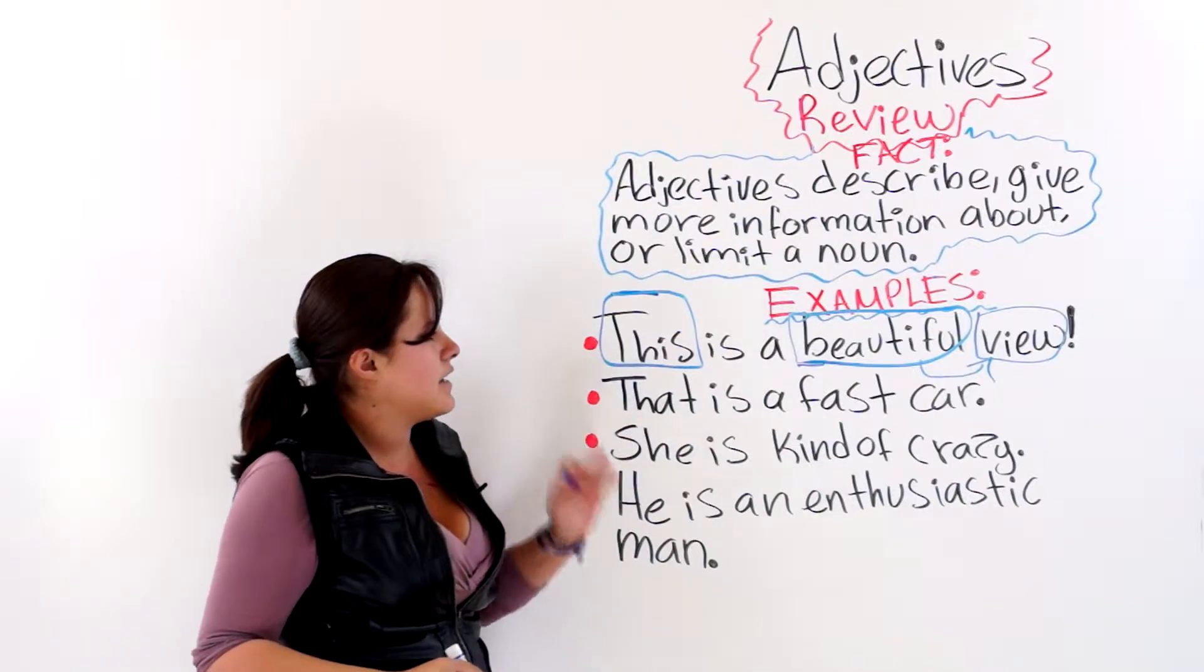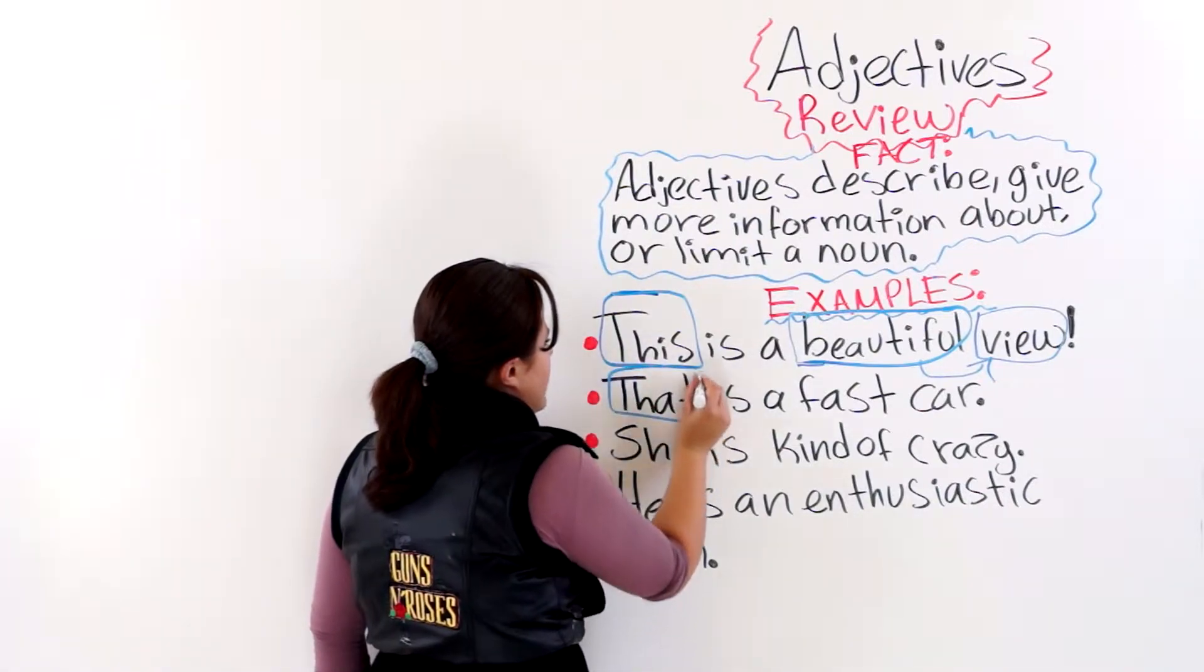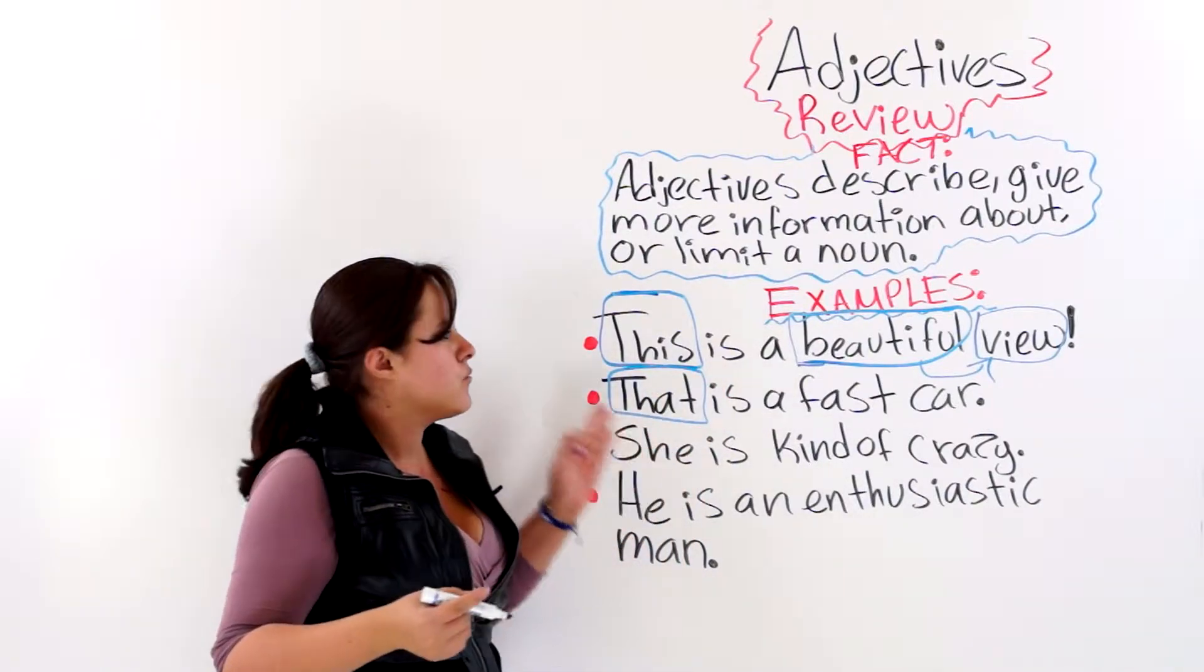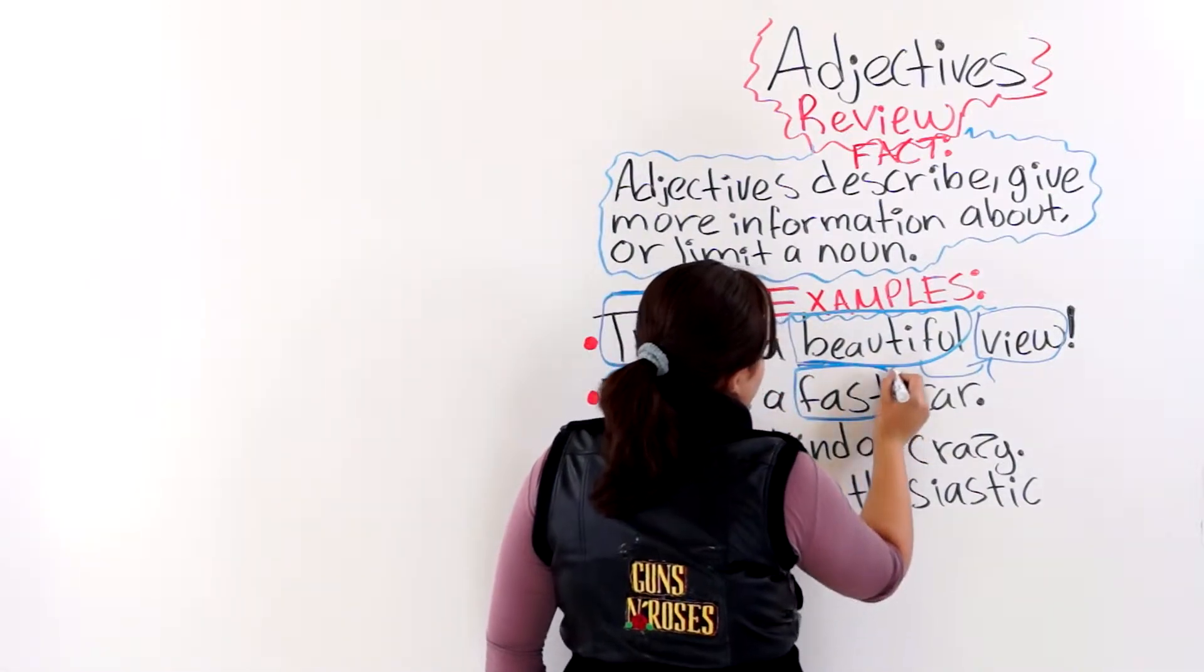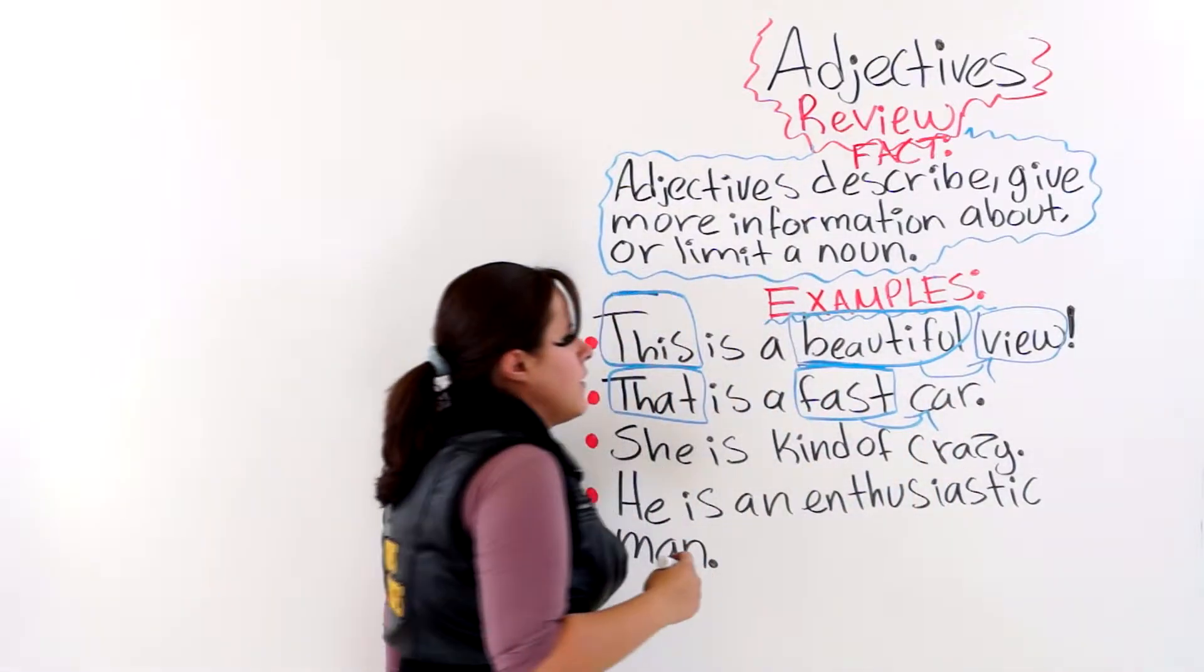The next one says, that is a fast car. That is an adjective that answers the question, which one? Fast is an adjective that is describing this noun here, car.